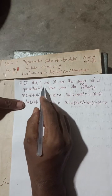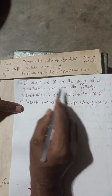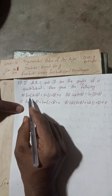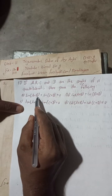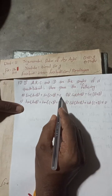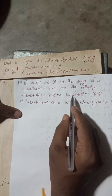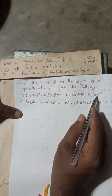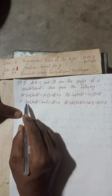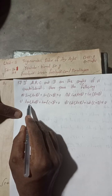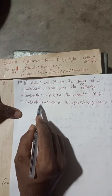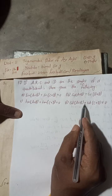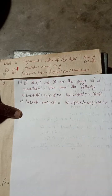So let's begin the solution now. If A, B, C and D are the angles of a quadrilateral, then prove the following: (a) sin(A+B) + sin(C+D) = 0; (b) cos(A+B) = cos(C+D); (c) tan(A+B) + tan(C+D) = 0; (d) cot(A+B) + cot(C+D) = 0.